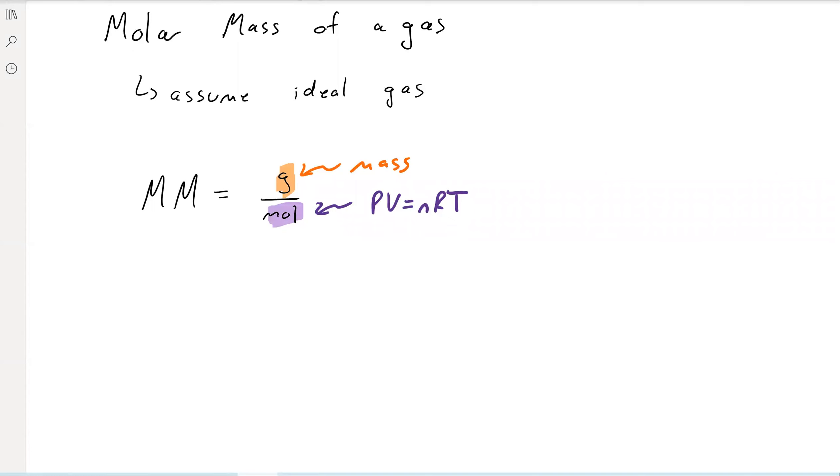We have PV equals nRT, and we have that n right there. So by measuring the pressure, volume, and temperature, we can calculate the moles. By weighing it, we can get the mass. Combine those two, we can get the molar mass.